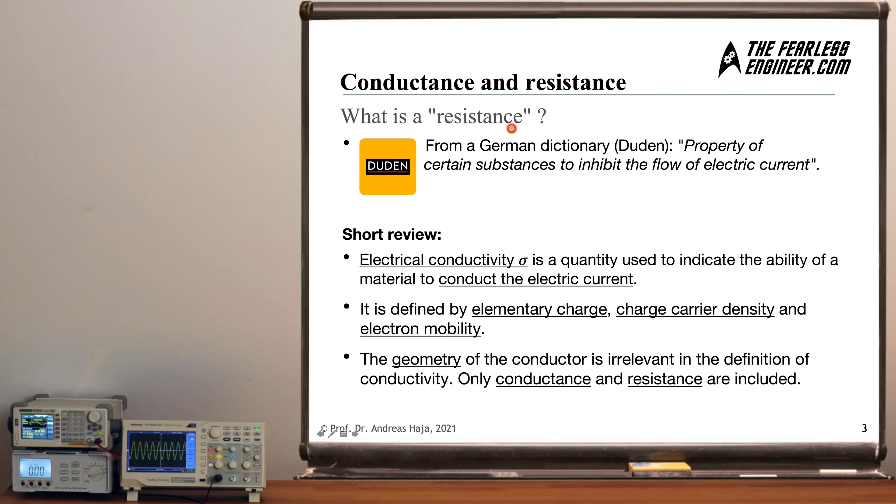Let's start with a broad definition of the term resistance taken from a German dictionary. It says that resistance describes or is the property of certain substances, for example copper, to inhibit the flow of electric current. So electric current, the flow of electrons through a conductor, is made harder by the material properties and this is described by a set of parameters which in summary are called resistance. Before we dig deeper, let's quickly recap some of the facts which we already have learned in previous videos and which we will need in this video in order to understand the concept of resistance.